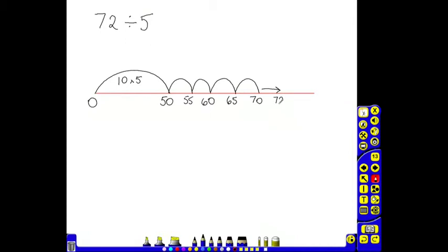So again the answer will be written for 72 divided by 5, there are 14 lots of 5, which makes 70, and a remainder of 2.